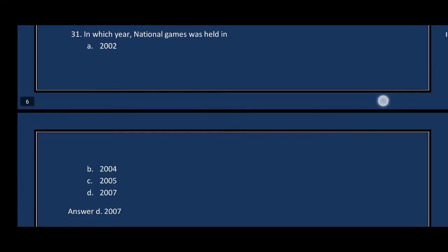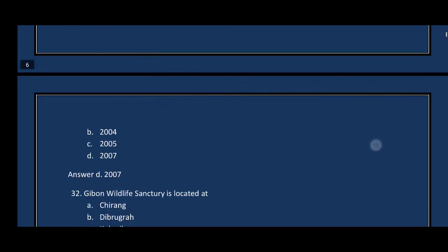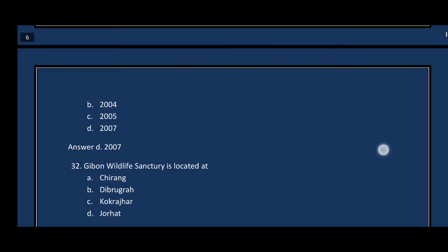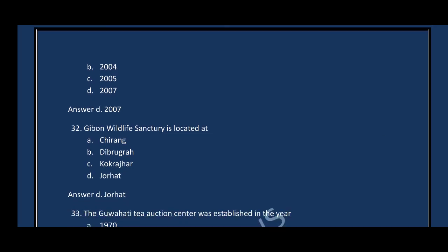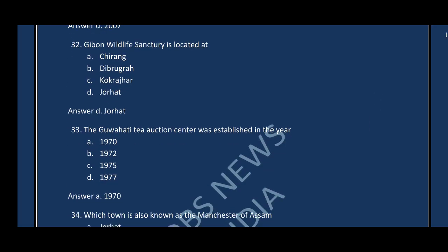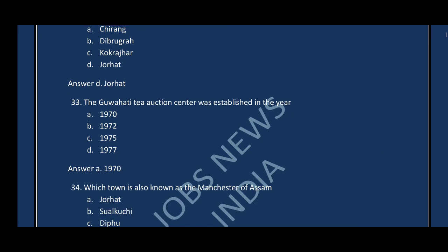Question: Which year were the National Games held in Assam? Question number thirty-two: The Gibbon Wildlife Sanctuary is located at — the correct answer is option D, Jorhat. Question number thirty-three: The Guwahati Tea Auction Centre was established in the year — the correct answer is 1970.